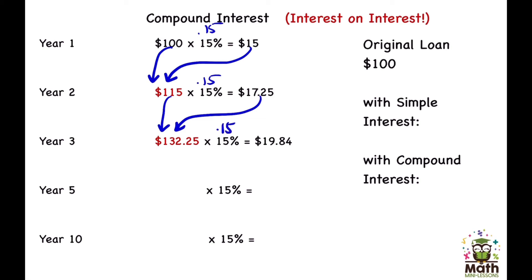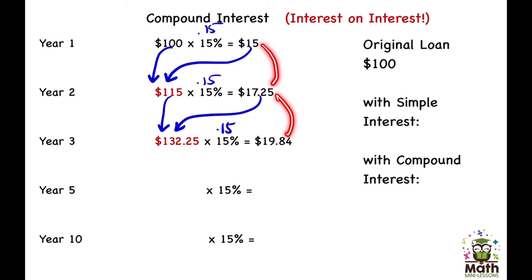We find 15% again to get $19.84. Each year I'm just taking whatever he owes and finding 15%, then adding it together. Notice the interest is growing slowly in the beginning — from $15, increasing by just about $2 each year. But the power is over time: the more time goes by, the more interest will grow because you're doing interest on top of interest.